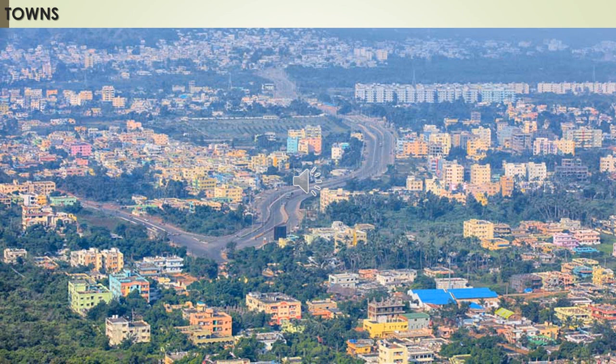Town is a general name for an urban place, usually a settlement meeting a prescribed minimum population threshold — here the population is more than 5,000. Based on their function, cities can be classified into types such as administrative town, cantonment (specially for military persons), and academic towns (specially for institutions like colleges, schools, or universities).